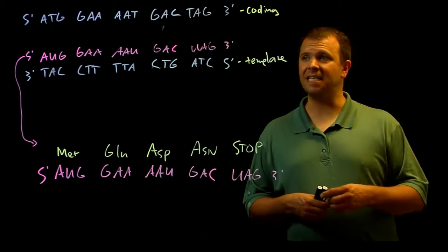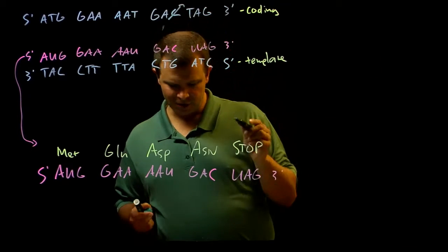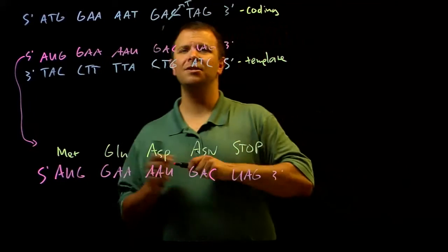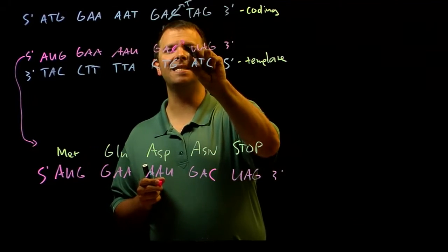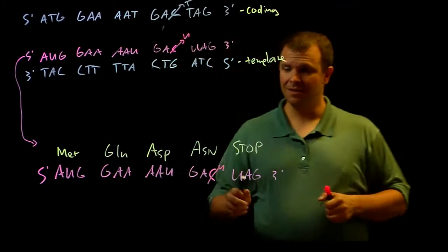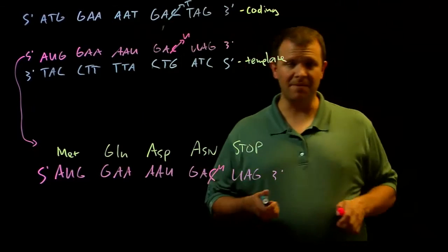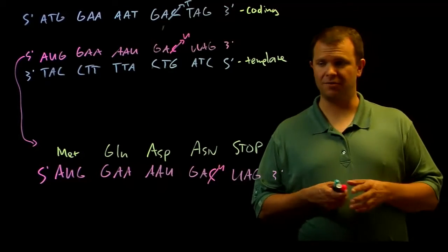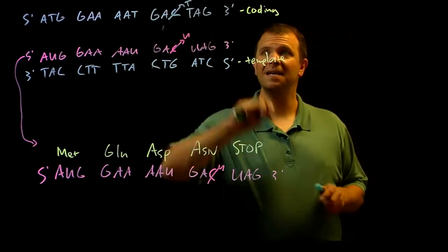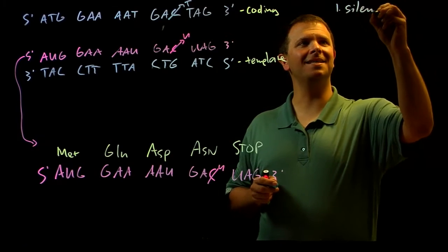And we've already seen one example of that. If I change GAC to GAT, then the RNA changes from GAC to GAU, but the codon GAU also codes for the amino acid asparagine. GAC and GAU both code for that. And so this kind of mutation is called a silent mutation.